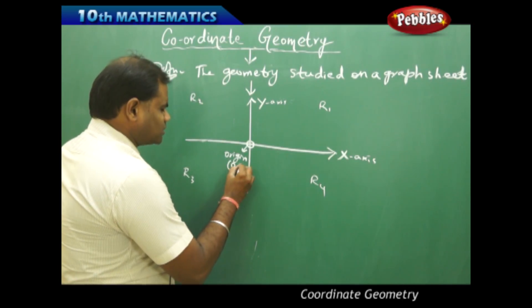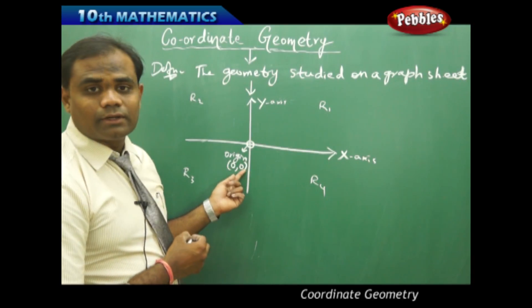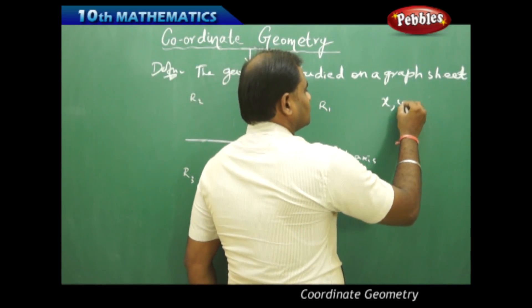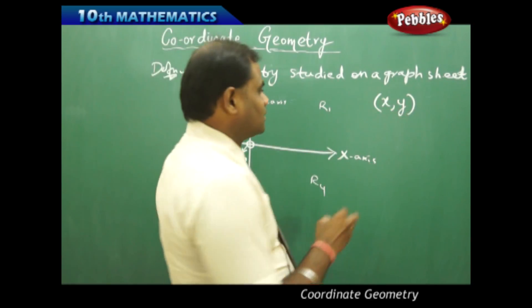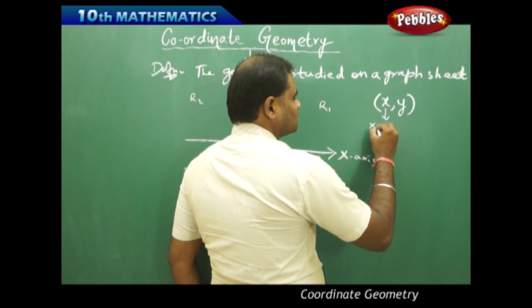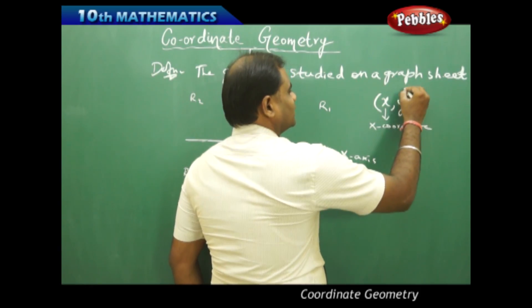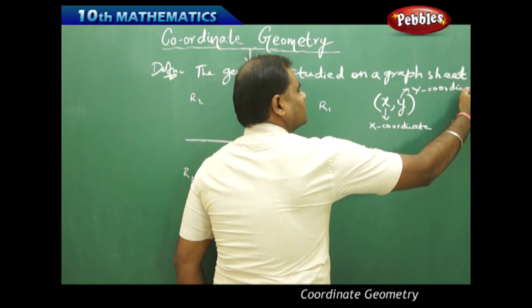And the coordinates of origin are (0, 0) where X coordinate is 0 and Y coordinate is 0. So when I write the position of the point, I generally denote with (X, Y) where this is called X coordinate and this is called Y coordinate.